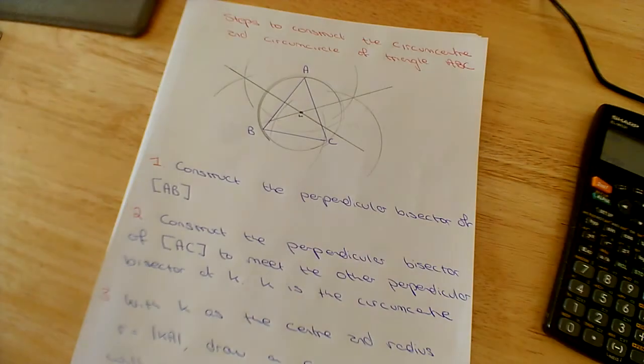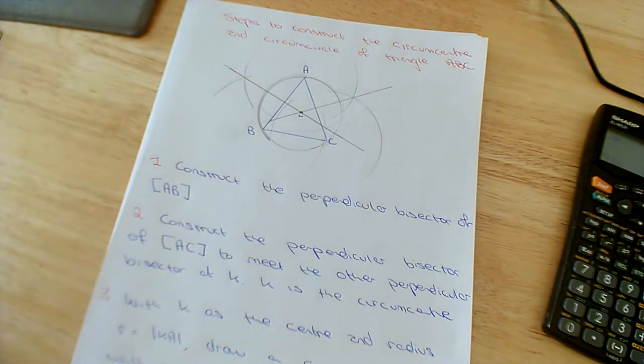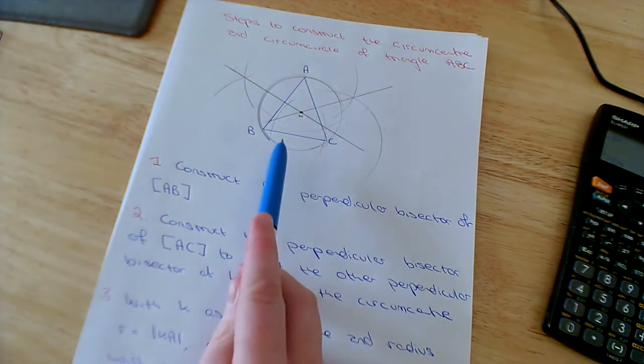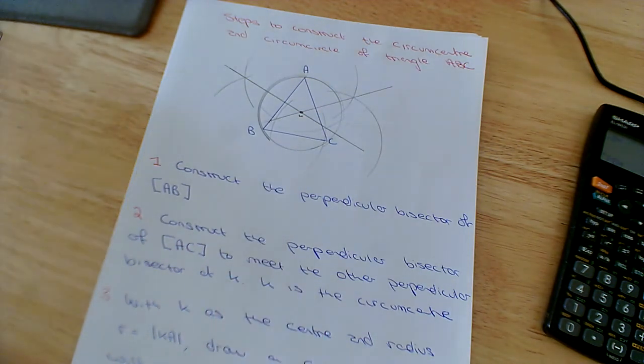So this construction is how to construct the circumcentre and circumcircle of a triangle ABC. This is what the finished product should look like and I'm just going to complete that now.